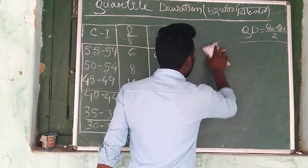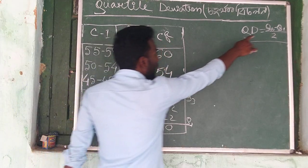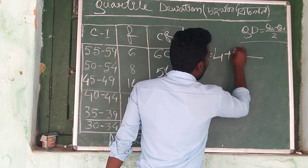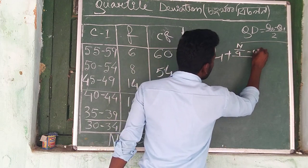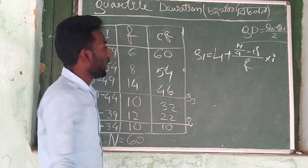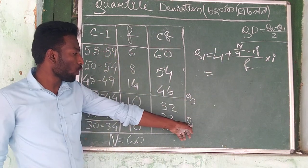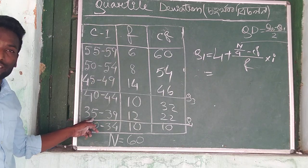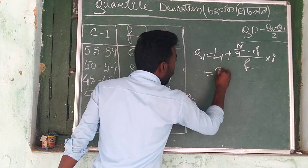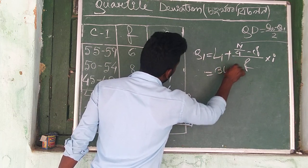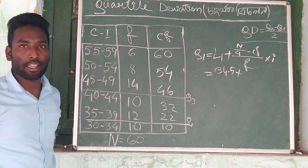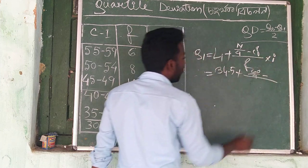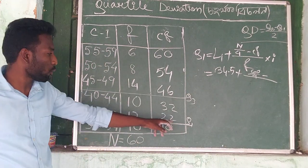This is the formula for quartile deviation: Q3 minus Q1 by 2, where Q1 is equal to L1 plus (n by 4 minus CF) into I by f. This is the formula for L1. This is Quarter 1, the class interval, semi-controller, and lowest point. The lowest number is 35.